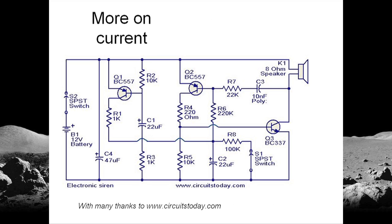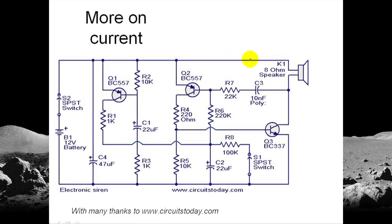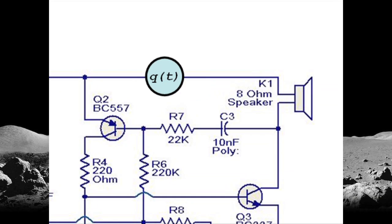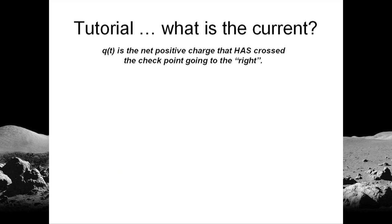Take that circuit with thanks to www.circuitstoday.com. If we want to know the current flowing through that speaker, what we do is we replace part of that wire with an instrument, like this. That instrument will be counting positive coulombs flowing to the right and negative coulombs flowing to the left. The sum of them would be q. Let's have a little bit of a tutorial.